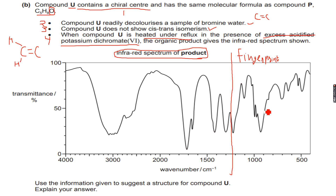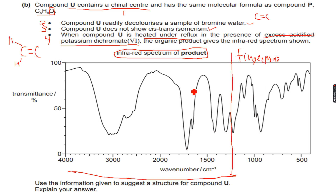We do not need to make any deductions in the fingerprint region; we only need to know what it is. All of our deductions will be made in the region above 1200 cm⁻¹, which is the region apart from the fingerprint region — the region I've underlined here — and that is where we will be studying the spectrum.